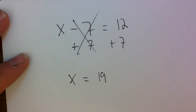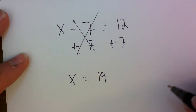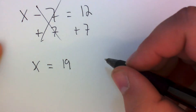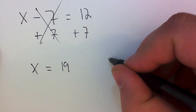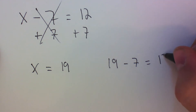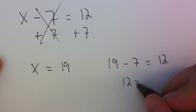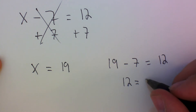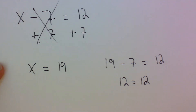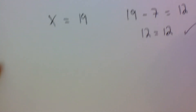How do I know I'm right? I take the x I just found and plug it back into my statement. I go: 19 minus 7 is equal to 12. I know that 19 minus 7 is 12, so 12 equals 12 — that is a true statement. That's how I know I'm correct.